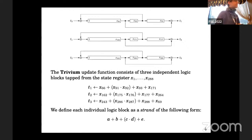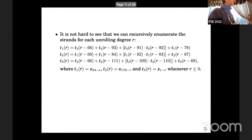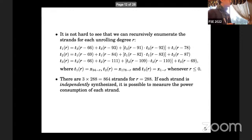A little refresher on Trivium: the Trivium update function consists of three independent logic blocks tapped from a state register of size 288 — we define each of those logic blocks as a strand. It's not hard to see that we can recursively enumerate the strands to get a tree-like structure. If you do this for the fully unrolled cipher for r=288 and synthesize each strand independently, we can measure the power of each strand.